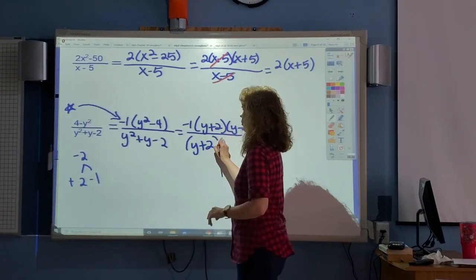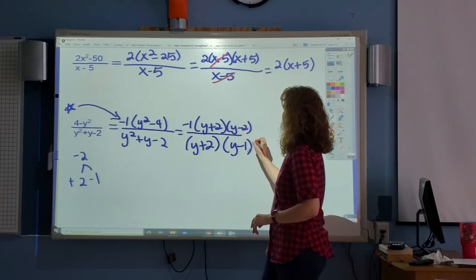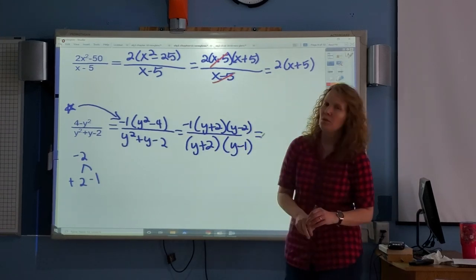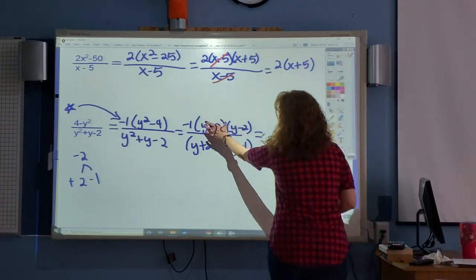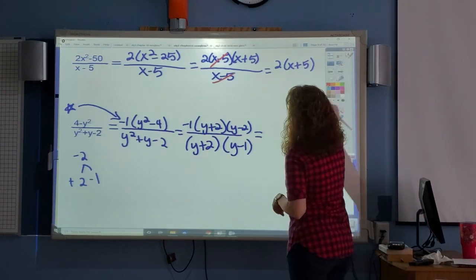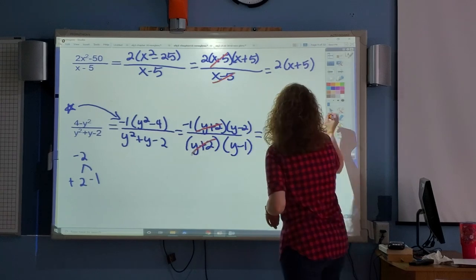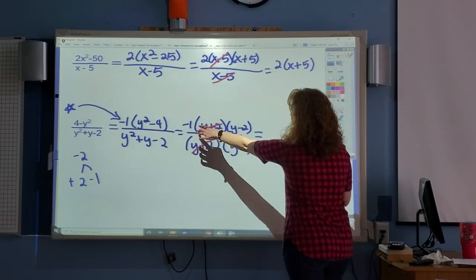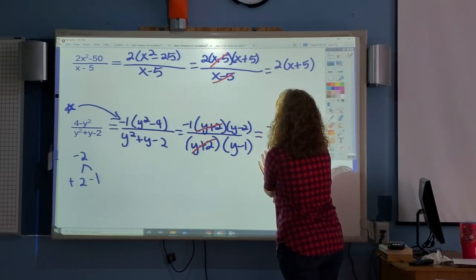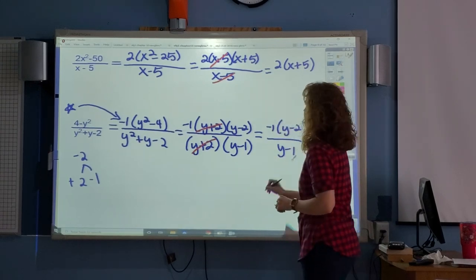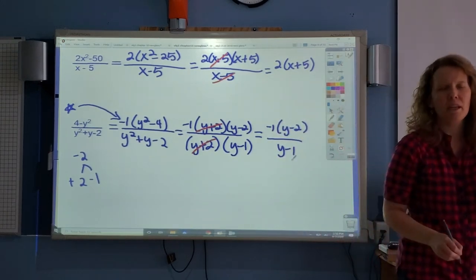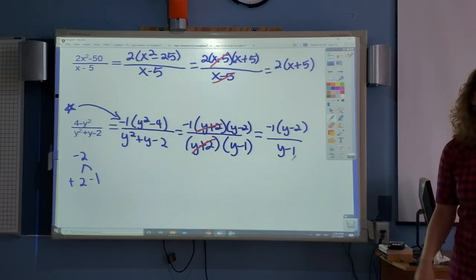Who do you see, Jamie, that needs to be crossed out? y plus 2. See them? They're both identical. So we're going to go get rid of them. Now, the final answer, don't lose the negative 1, negative 1 times y minus 2, all over y minus 1. You don't have to multiply that negative 1 into the 2, but it's okay. It's all right.